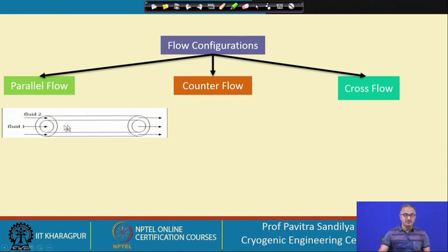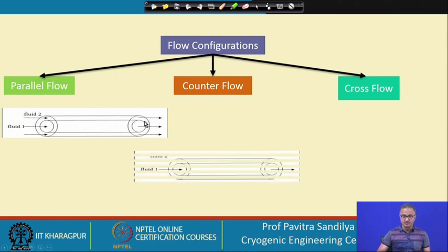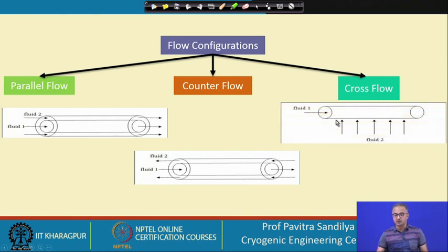In parallel flow, two fluids — fluid one and fluid two — flow in a set of concentric pipes, where the inner pipe is concentrically placed within an outer pipe. One fluid flows inside the inner pipe and another in the annular region between the two pipes. If these two fluids flow in the same direction, we call it a parallel flow configuration. If they flow in opposite directions, we have counter current flow. In cross flow, one fluid flows through the pipe while another crosses perpendicularly.